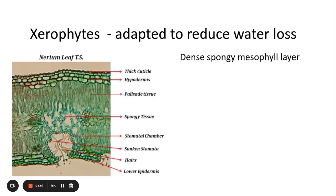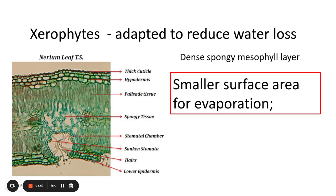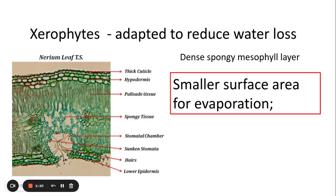Another adaptation is that xerophytes have a dense spongy mesophyll — this is the area inside the leaf. The reason why they would have a dense spongy mesophyll is so that it's a smaller area for evaporation of water from the vascular bundle inside the leaf into the spongy mesophyll area before the water vapor leaves via the stomata.